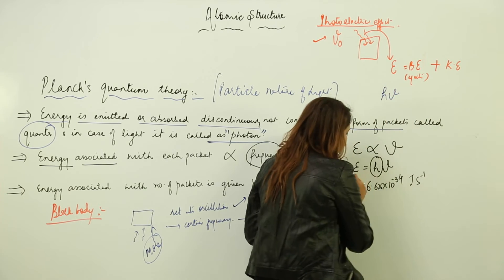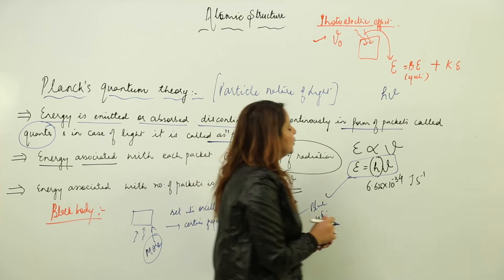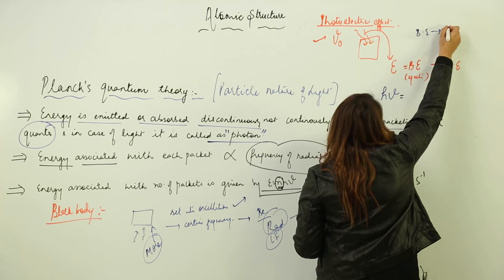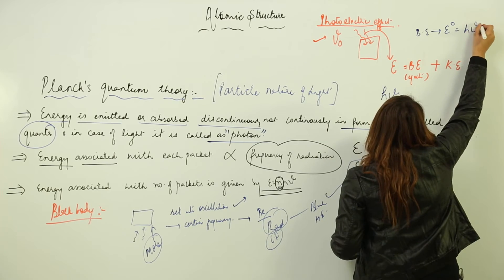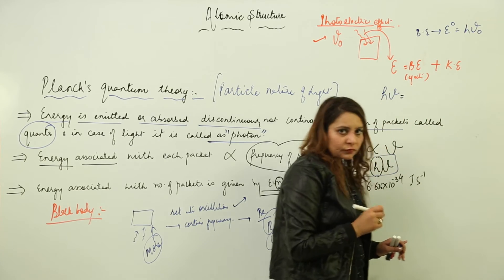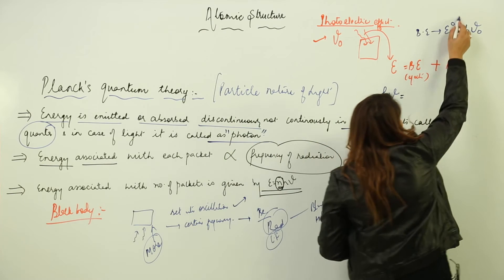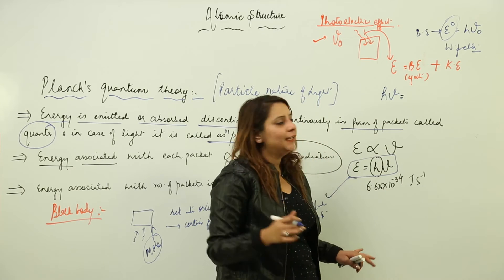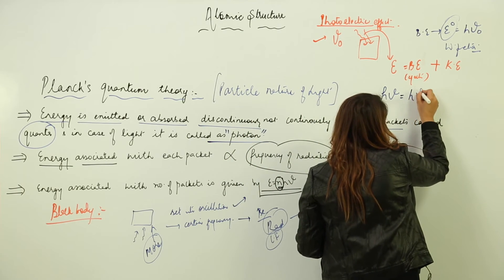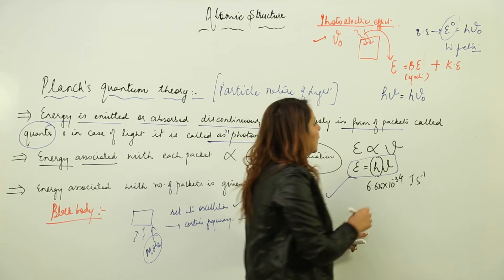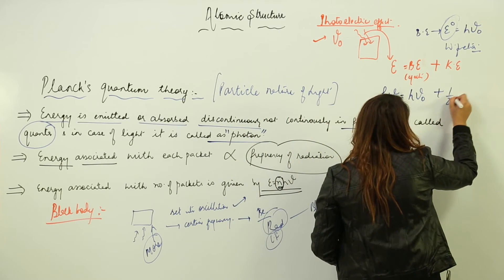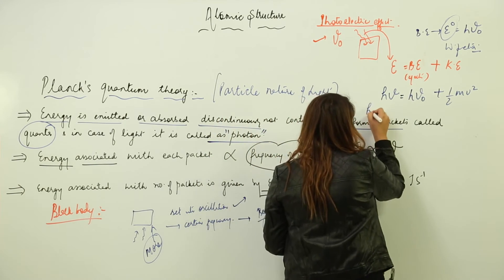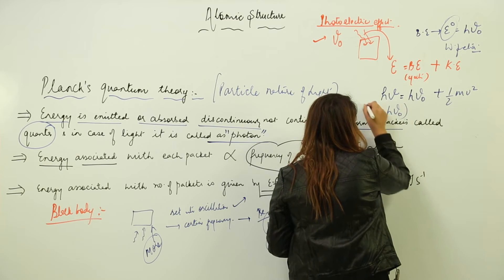The rest of the energy is given to the electron as kinetic energy. The total energy is hν. Out of that, the binding energy is hν₀, where ν₀ is the threshold frequency — this is called the work function. So hν₀ is used for the ejection of the electron, and the rest is given to the electron as kinetic energy.